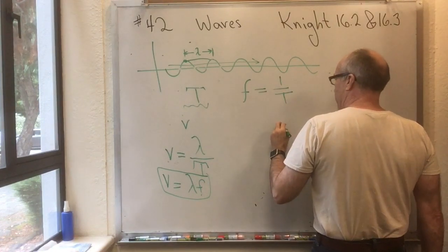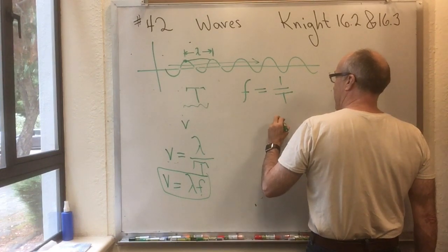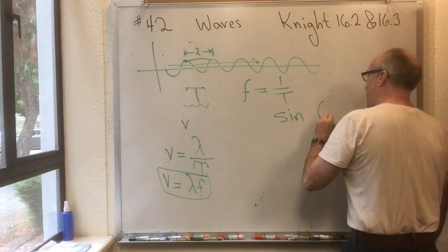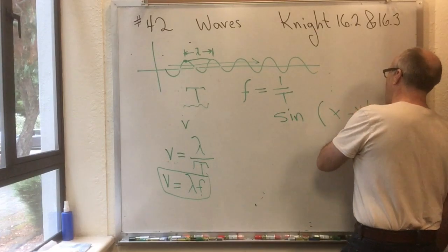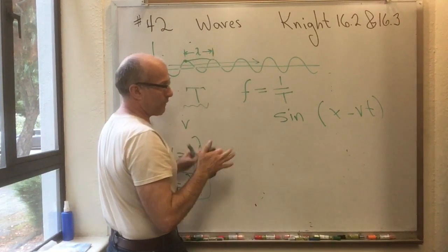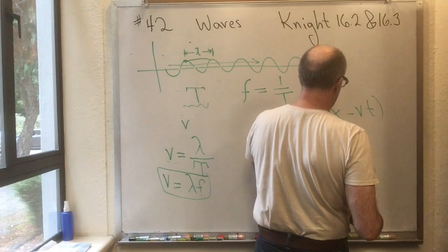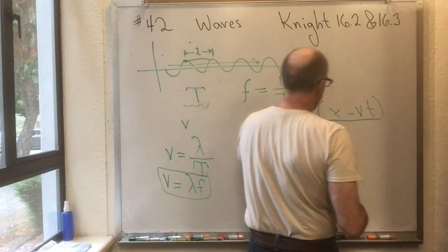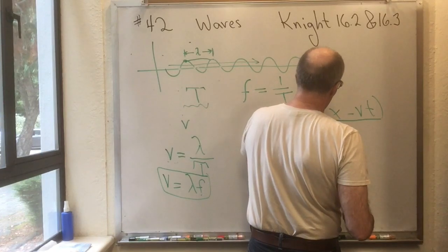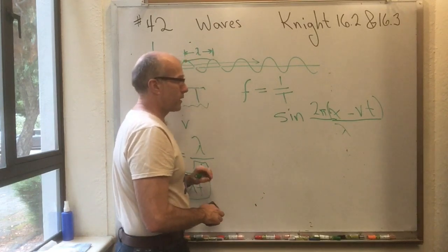Here's how you write that. You've already learned that if I write things as a function of X minus VT, I have a wave traveling to the right. But this doesn't work. You have to kind of fix this. So you actually have X minus VT, and then you have a 2 pi in the numerator, and then a lambda in the denominator.